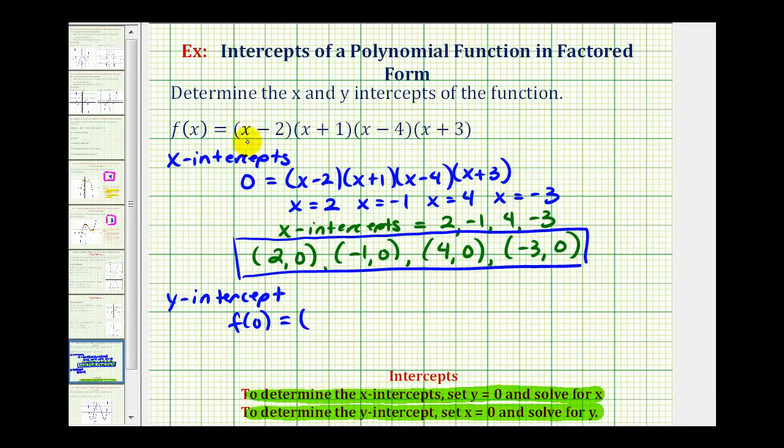So we would have zero minus two, that's negative two. Zero plus one is one. Zero minus four is negative four. And zero plus three is three. This product will be our y intercept. So negative two times one is negative two, times negative four is positive eight, times three is equal to positive 24.